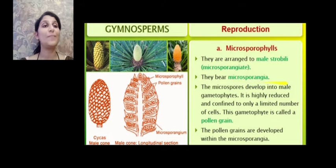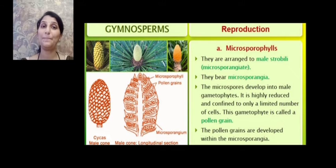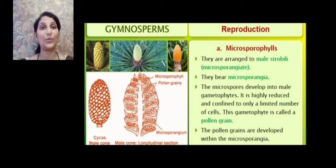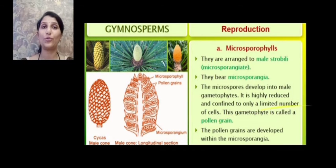There are two types of sporophylls: microsporophylls, which bear microsporangia, and megasporophylls, which bear megasporangia. Microsporophylls are arranged into the male strobilus and bear the microsporangia. Inside the microsporangia, microspores are produced by meiosis and germinate to produce the male gametophyte. This male gametophyte is highly reduced and confined to a very limited number of cells, and is called the pollen grain.